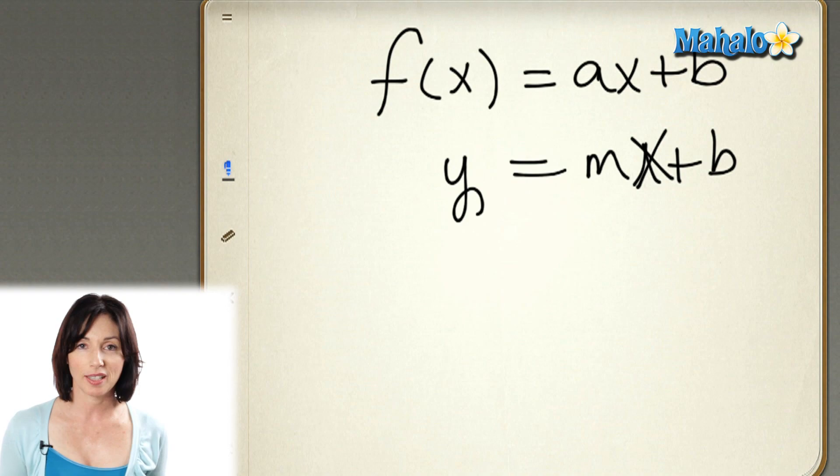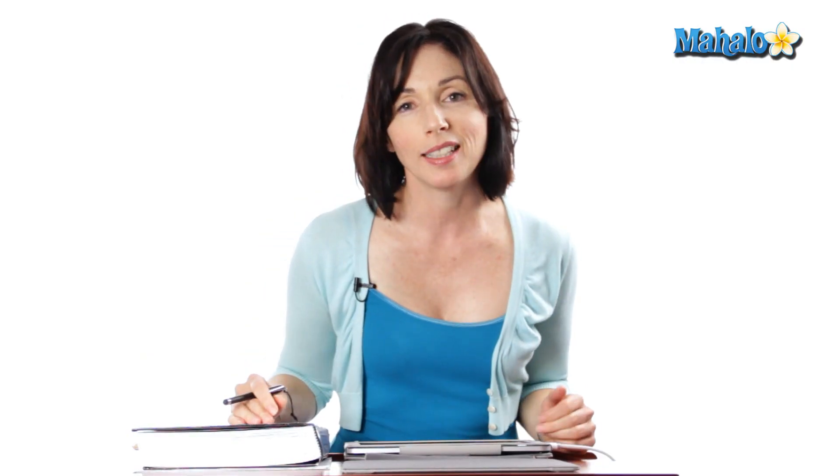And it is very similar. The equation of a line in slope-intercept form is an example of a linear function. It describes a specific relationship between x, the independent variable, and y, the dependent variable.